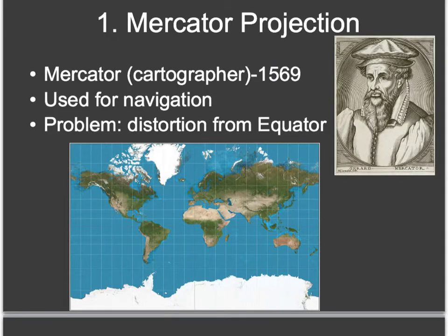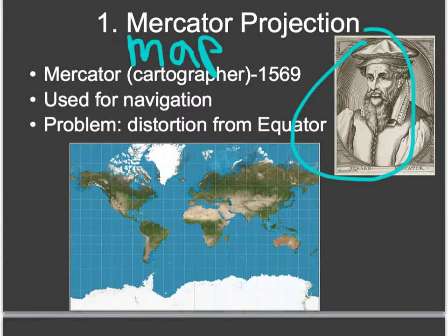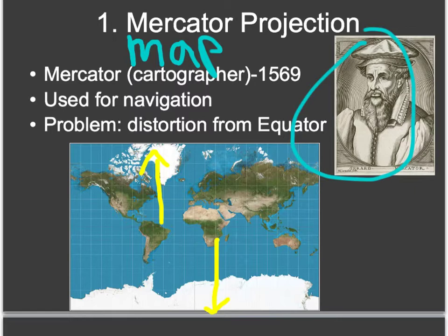This first one is the Mercator projection. Mercator was a cartographer — a fancy word for a map maker. The original Mercator projection was really useful because it was used in navigation. Looking at the period 1569, we're getting to the era of exploration, and people are starting to navigate, so it's very good for navigation. However, there's a bit of a problem in terms of interpreting it. As you go too far north from the equator, and very far south, the land masses towards the top and towards the bottom begin to look a lot bigger than they are.